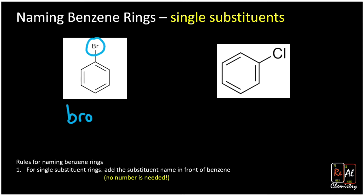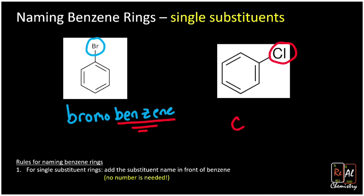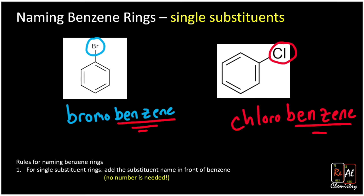For a single substituent ring, we just add the substituent in front of benzene. In this first compound we see bromine on benzene, so we're just going to put 'bromo' and then 'benzene.' Similarly, when we have chlorine we're just going to put 'chlorobenzene.' This name always ends in benzene and we just tack the substituent up front.